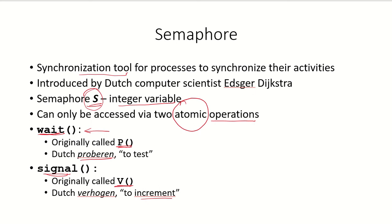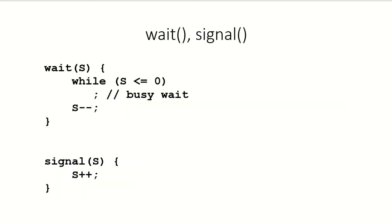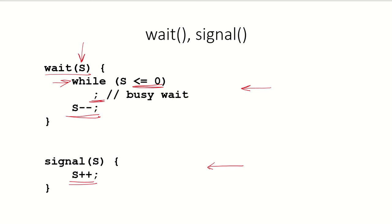The wait operation was originally called P, which is Dutch for Verhogen, meaning to increment. The definition of the wait operation on semaphore S is: while S is less than or equal to 0, the process keeps looping and waiting. If the value of the semaphore is positive — greater than 0 — it will be decremented by 1. In the signal operation, the semaphore is simply incremented by 1. These are the two basic operations of the semaphore.